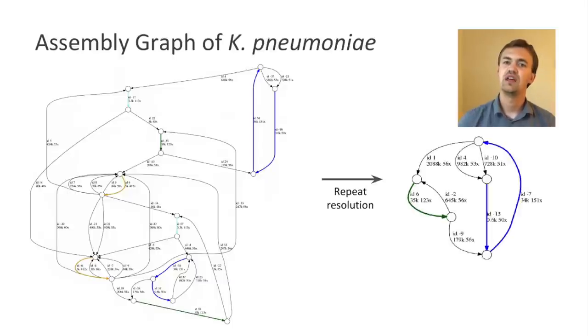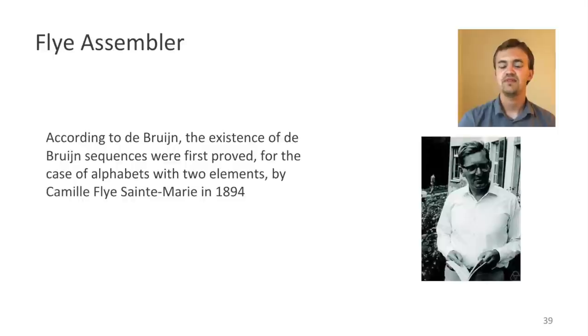And here's how this graph looks after repeat resolution. Most of the repeats have been resolved, and those that are left are simply very long, of length 35, 36,000 base pairs. And this is basically the result of your assembly, and the black edges will be output as contigs.